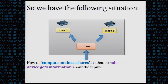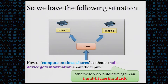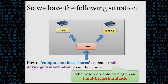An obvious question is what to do with these shares and how to compute further. It is also easy to see that no individual sub-circuit can receive non-trivial information about the input — otherwise the input-triggering attack would work again. So we need to perform computation such that no sub-circuit gets any information about the input.